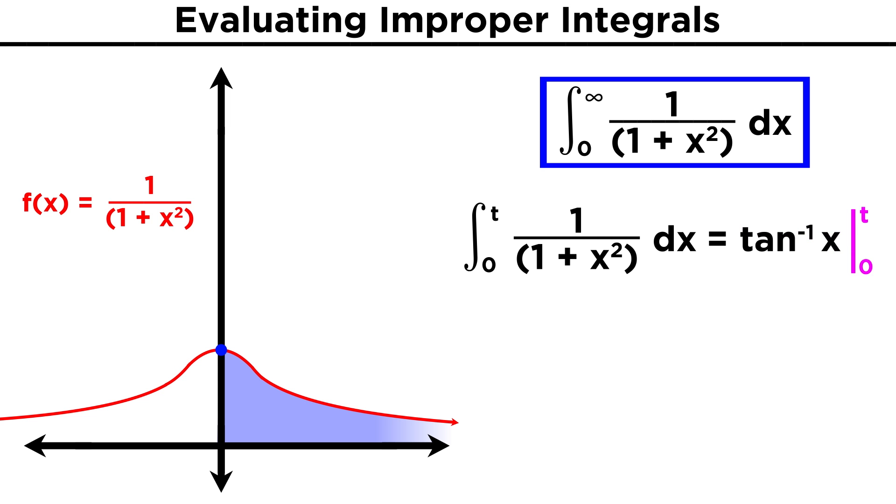We will then evaluate this at t and then zero, and we get inverse tangent of t minus inverse tangent of zero. We can evaluate the inverse tangent of zero quite easily, it is simply the angle that gives us a tangent value of zero. As tangent is sine over cosine, when sine is zero we get zero overall, and sine is zero at zero, so inverse tangent of zero is zero. That leaves us with the inverse tangent of t, which we must now examine as t approaches infinity.